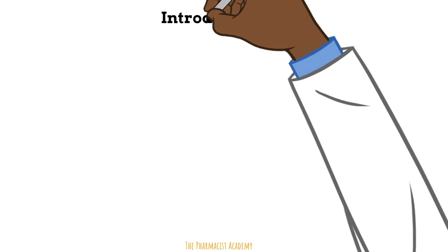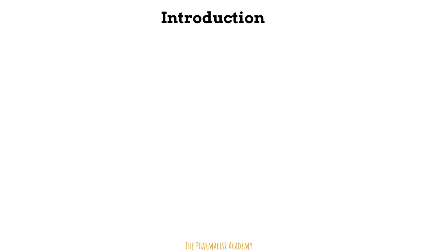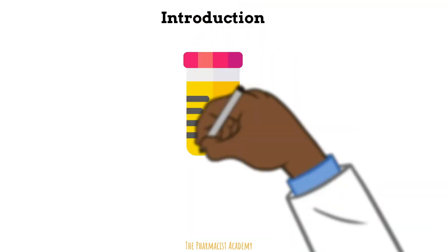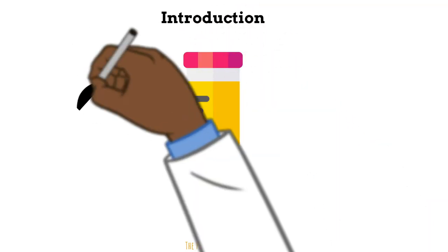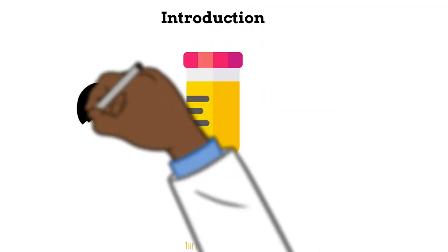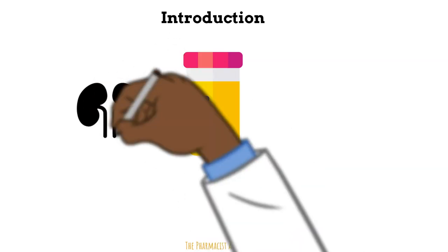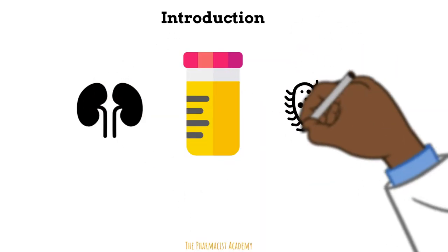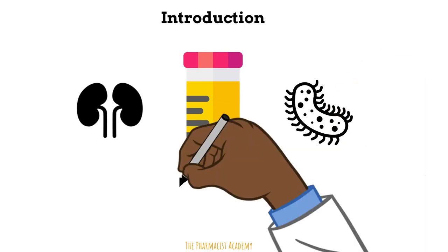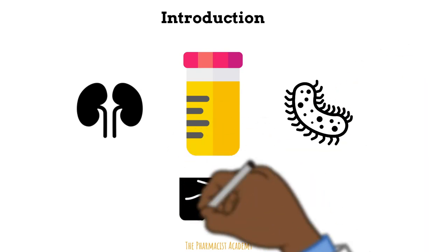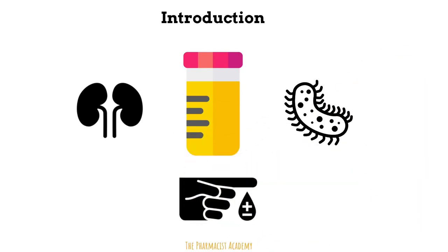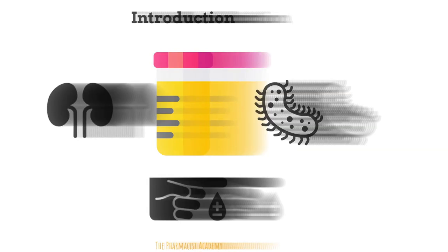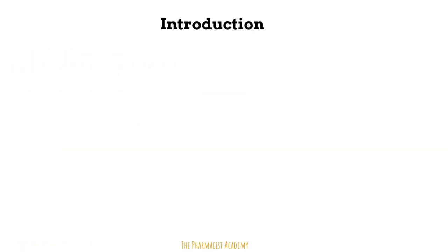Urinalysis is simply a test of the urine, and with this we assess several things with the goal of detecting certain disorders or diseases associated with the kidneys, UTI infections, or diabetes. It's usually used in conjunction with other tests such as a CBC or a CMP to make a diagnosis.